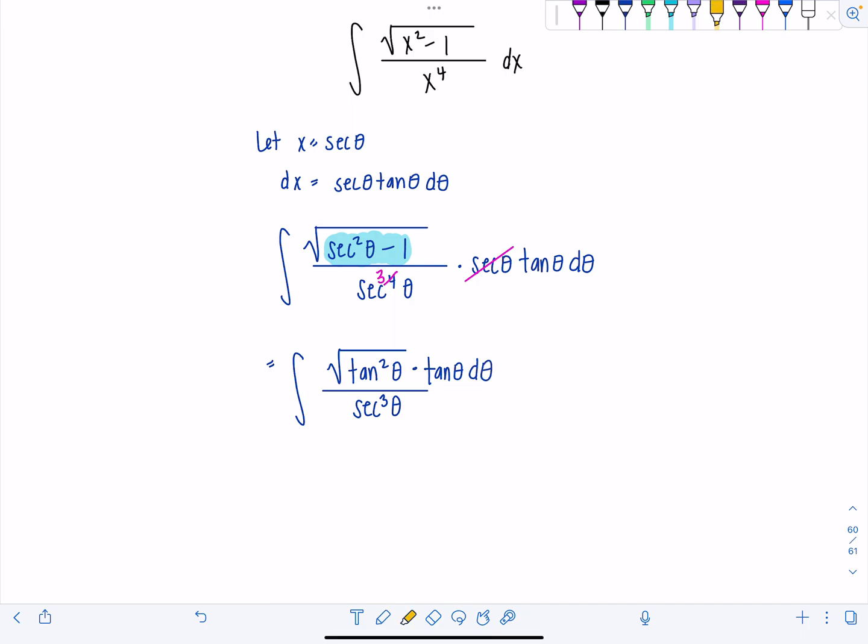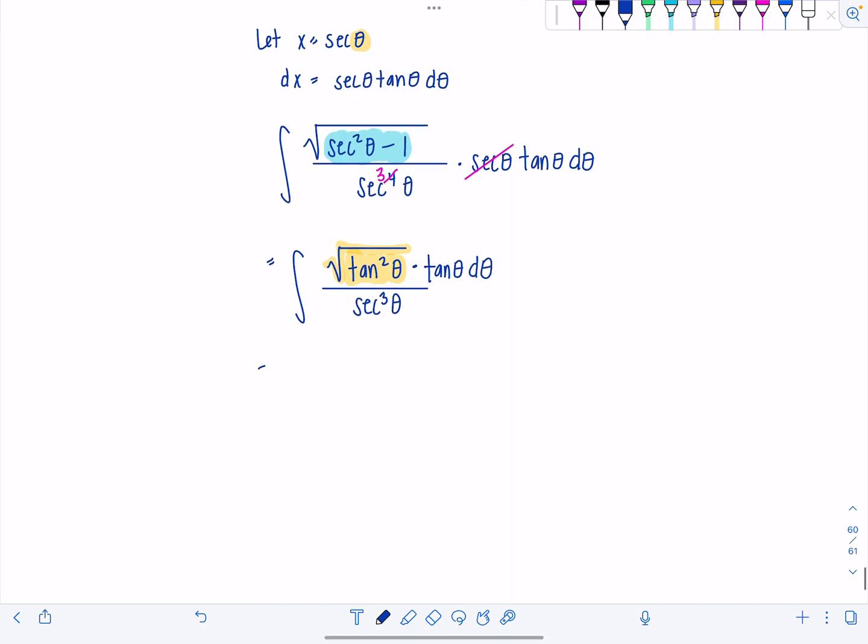Alright. Now, square root of tan squared theta, technically it's absolute value of tan theta, but remember we restrict this angle so we don't have to worry about the absolute value. I'm going to say it every time. So we just have tangent theta times another tangent theta in the numerator. That's tan squared theta over secant cubed theta, d theta.